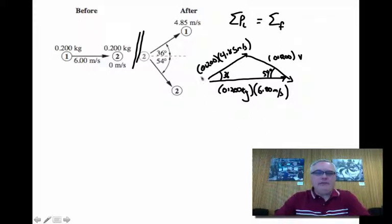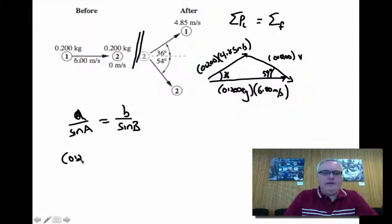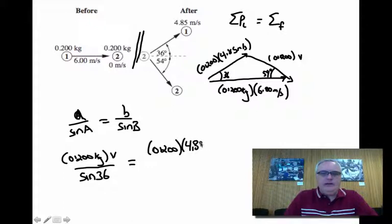So now that we have our vector diagram, I can see that using the sine law, I can solve for that unknown quantity. So what we would have is a over sine of a, and then b over sine of b. So on the a side, we have 0.20 times V over sine of 36. And that equals 0.20 times 4.85 over sine of 54. And what we find is that unknown velocity is 3.52 meters per second.